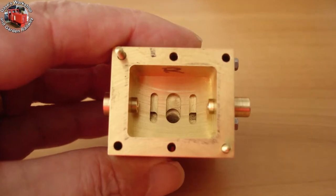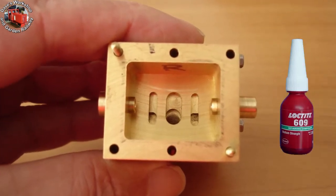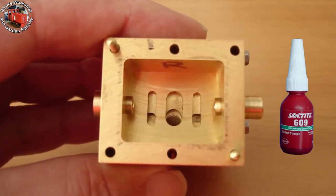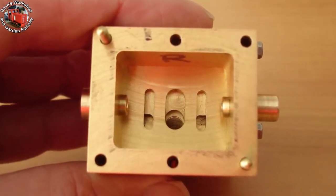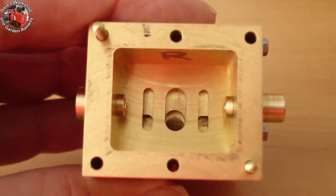Here are the bushes, Loctited in with Loctite 609 retainer. The front bush is drilled three thirty-seconds and is blind. The rear is drilled and reamed one eighth inch through.